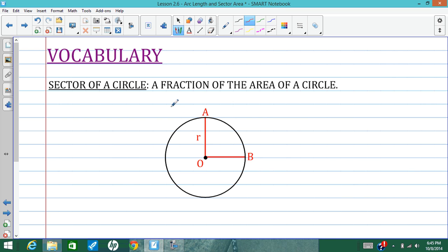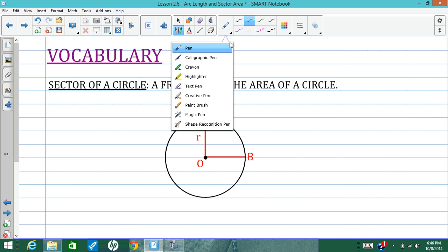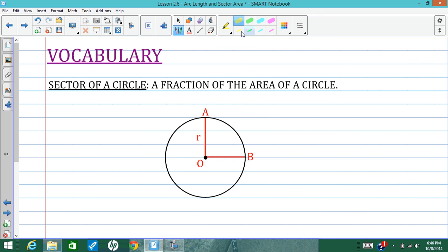A sector of a circle is just a fraction of that area. So the area is all the space inside the circle. A sector is just a fraction of that area. So if I want to talk about this sector, I want to know about all this area inside this piece of the circle. This is one sector of a circle.